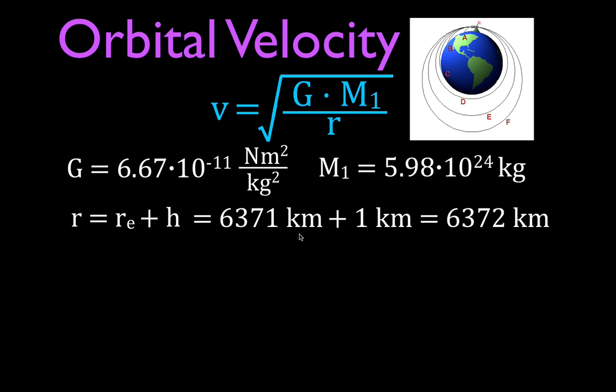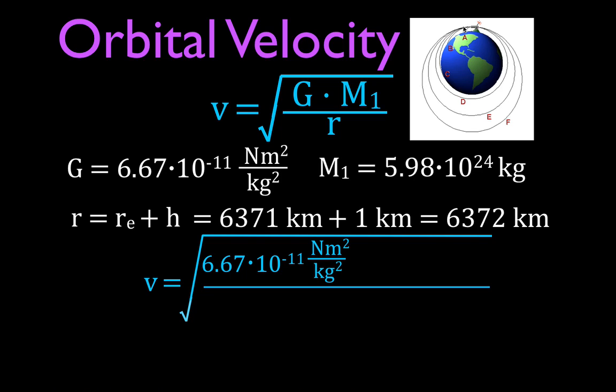So those are the three values we need to calculate the orbital velocity one meter off the Earth's surface, or how fast we would have to throw something, project something horizontally, so that it comes all the way back. We're just going to plug the values in. 6.67 times 10 to the minus 11 newton meters squared per kilograms squared, gravitational constant. The mass, because the constant has kilograms in it. The mass must be in kilograms. It's given in kilograms. That's not a problem.